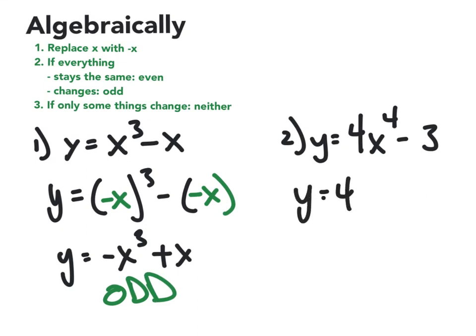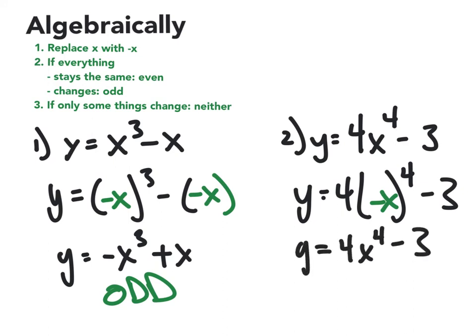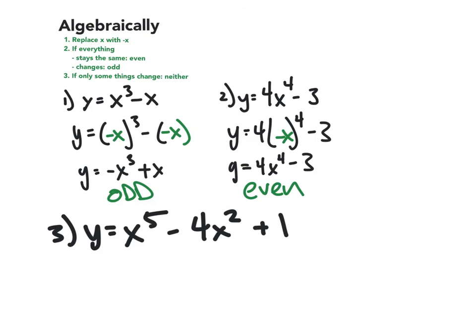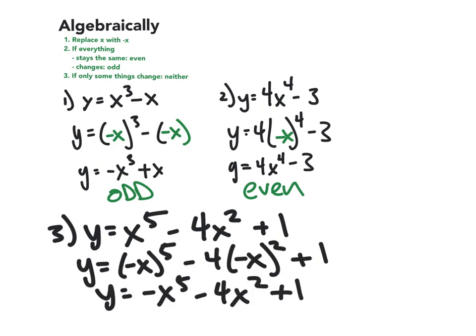Now, doing the same thing over here, whenever you raise any negative number to an even power, the negative is going to fall away. So this comes back out to 4x to the fourth minus 3. All of the signs are the same, so this must be an even function. Try this one out for yourself. Pause the video and see if it's even, odd, or neither. You should see that the x to the fifth turns negative, but the negative 4x squared, negative x times negative x is just positive x squared. So these stayed the same. So because not everything changed, this is an odd function. I know that these notes have been long, but thank you and goodbye.